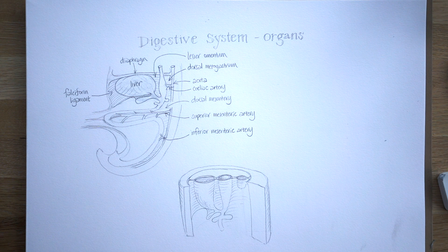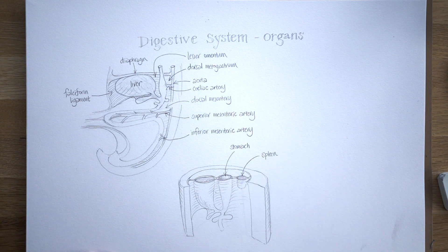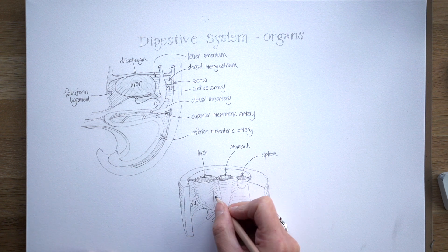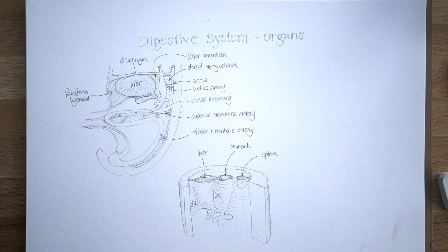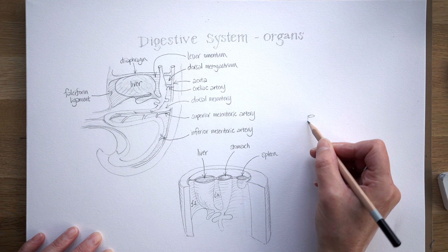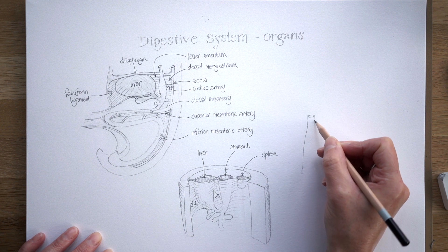Now I'm going to label up what we've got here. The spleen lies within the dorsal mesogastrium, the dorsal mesentery of the stomach. There's the stomach itself, and the more solid liver in front of it. FL stands for falciform ligament; LO is the lesser omentum, stretching between the liver and the stomach. You can also see a couple of other buds just below the liver — the gallbladder also buds off as part of the liver bud.